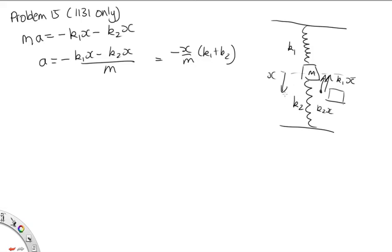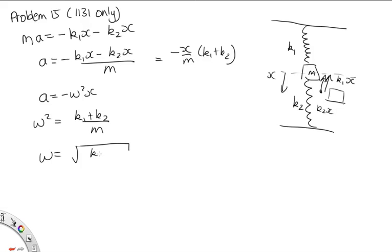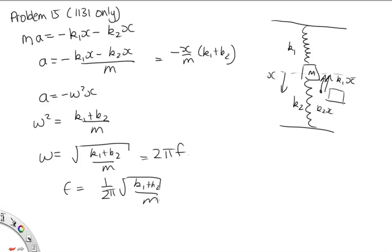The acceleration is A = −(k₁ + k₂)x / m. Since A = −ω²x for simple harmonic motion, ω² = (k₁ + k₂)/m. Therefore ω = √[(k₁ + k₂)/m] = 2πf, giving the frequency f = (1/2π)√[(k₁ + k₂)/m]. That's the answer.